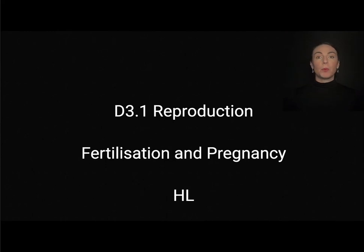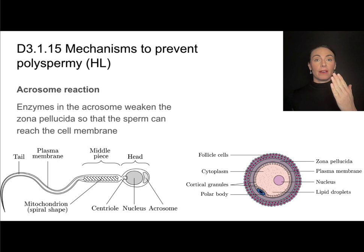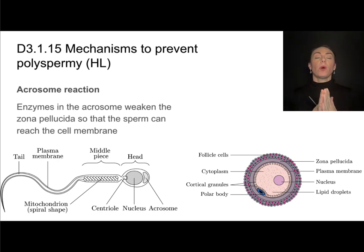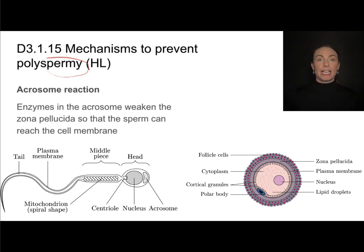In this video from D3.1 on reproduction, we'll be focusing on higher level content related to fertilization and pregnancy. We'll start with the mechanisms of fertilization. The plasma membrane of the sperm has to fuse with the plasma membrane of the egg, and we only want one sperm to fertilize the egg — we want fertilization to occur, but we don't want many sperm fertilizing the egg.